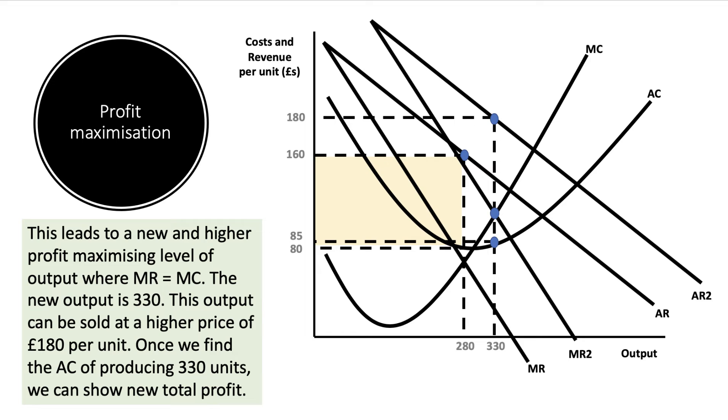You can see there's a much bigger area of total profit, and we can calculate this as you're often expected to do in an exam. The total profit now is 330 units times by the profit per unit, which is 95 pounds per unit, giving a total profit of 31,350 pounds.